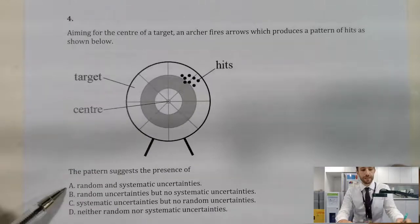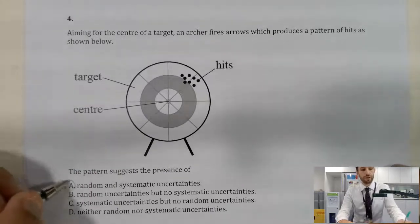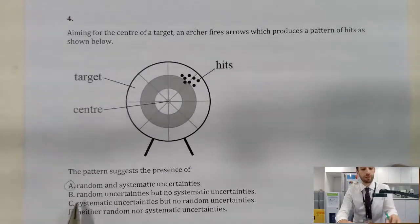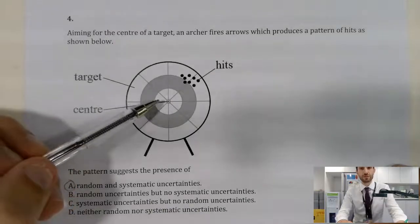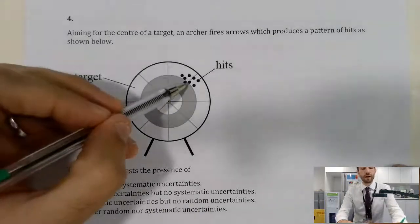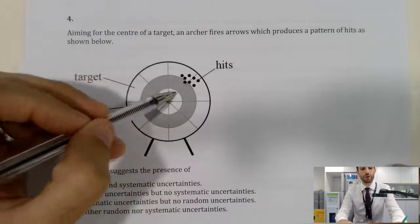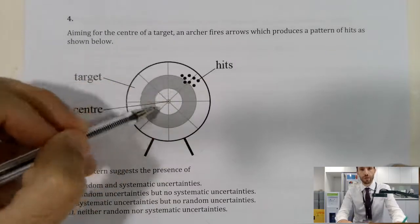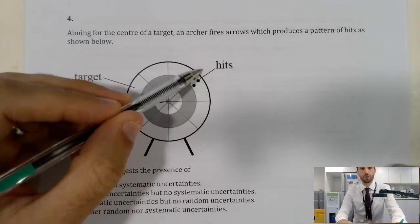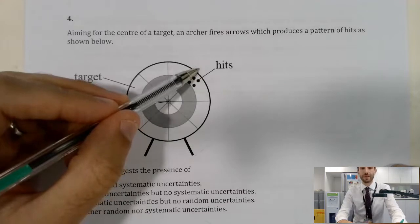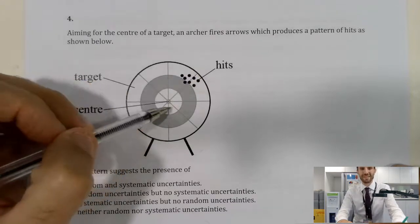Let's go through. A, we've got random and systematic errors. That's the answer here, is A. But why is it not B, C and D? Well, random uncertainties, but no systematic uncertainty. Remember, systematic uncertainty is shown by our arrows, on average, not reaching the bullseye. These are quite clearly all shifted away one distance from the bullseye, and so therefore, there is a systematic error.